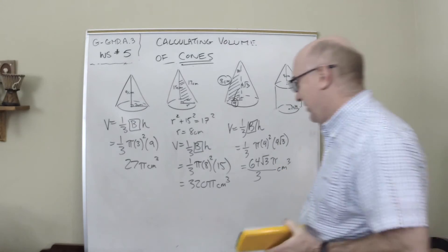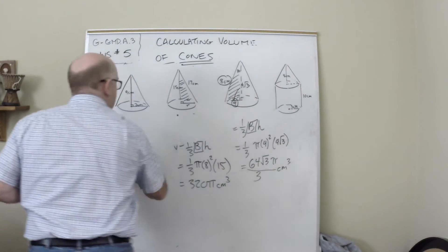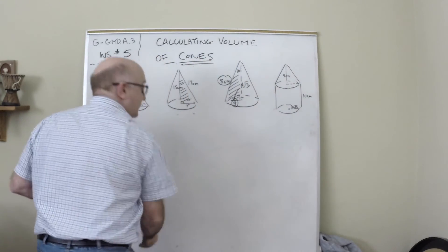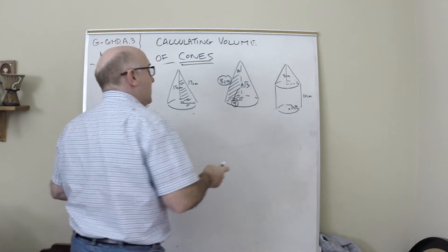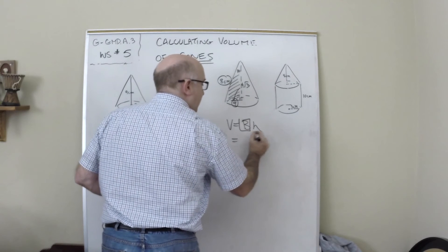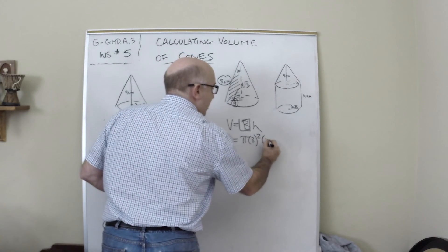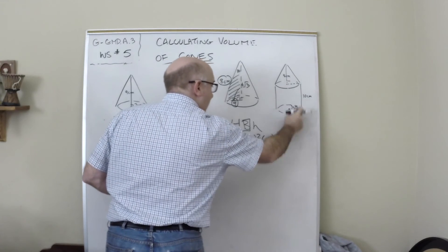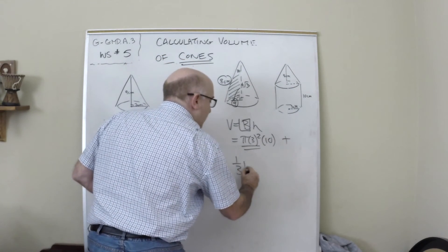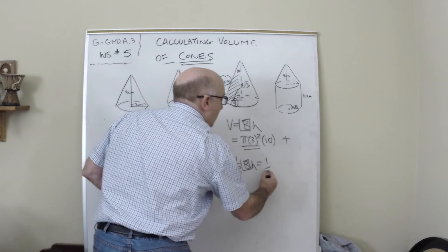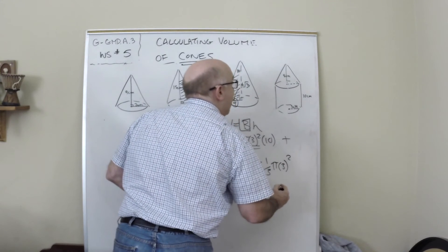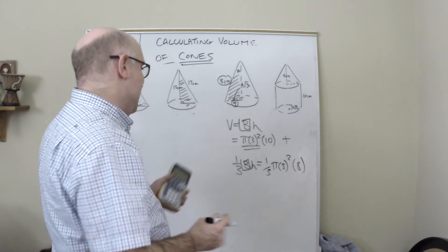All right, one more to do here. This guy here is just a composite of two things - it's the cylinder added to the volume of the cone. So the cylinder is one base times its height, so it's πr²h, πr² and then times the height. And then we would add that to one-third Bh, one-third, and so the B would be the same πr² and then its height is 8.